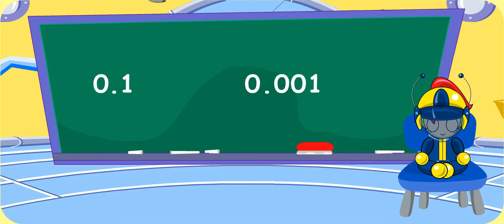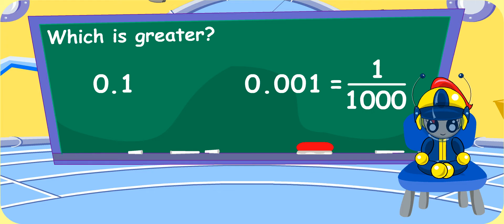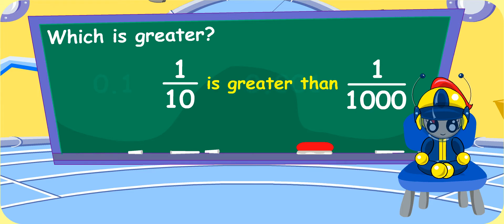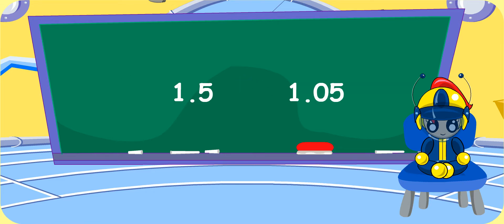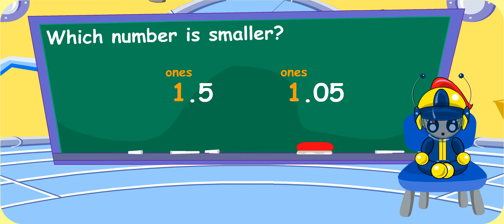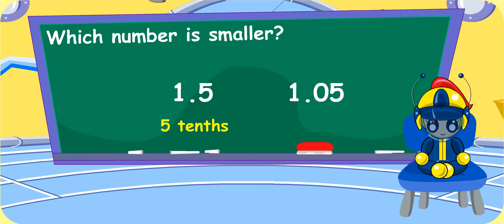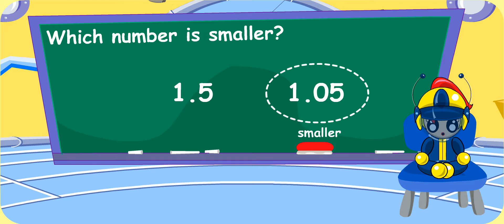Look at this. Which is greater? 0.001 or 0.1? 0.001 is 1 over 1,000. 0.1 is 1 over 10. 1 over 10 is greater than 1 over 1,000. Thus, 0.1 must be greater than 0.001. Wonderful. Look at this set of numbers again. Tell me which is the smaller number. Since the ones have the same value, I will have to compare the values of the digits after the decimal points. 0.5 is 5 tenths. Yes. 0.05 is 5 hundredths. I know. 1.05 is smaller. That's right.